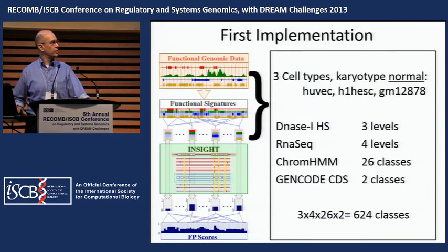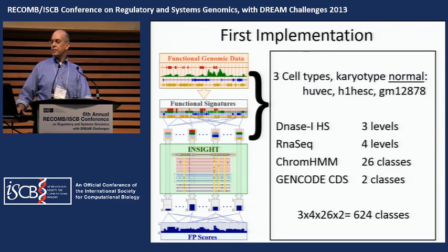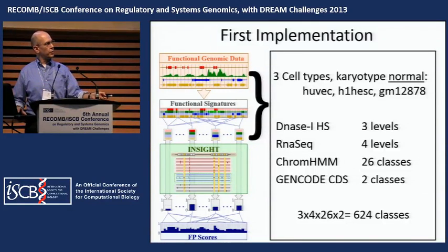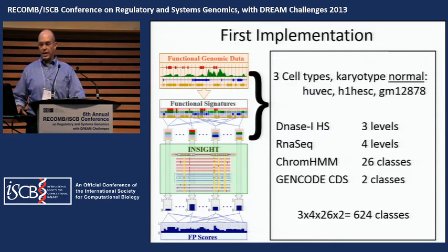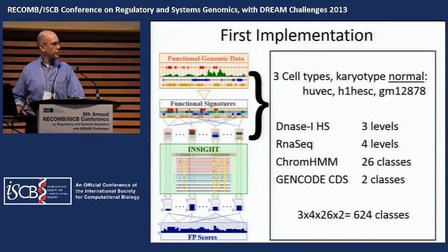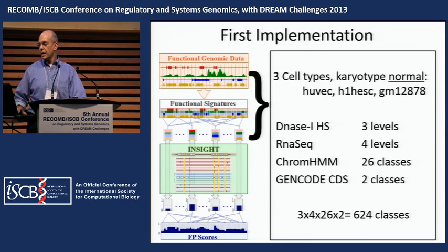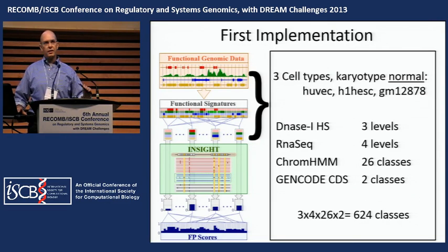We begin with three karyotype-normal cell lines: HUVEC, an epithelial cell; H1HESC, an embryonic stem cell; and GM12878, a B lymphocyte. For each cell type, we obtain a range of functional assays spanning important genomic properties: DNase-1 hypersensitivity, quantized to three levels of signal strength; RNA-seq, representing transcriptive activity, quantized to four levels; ChromHMM, representing chromatin and histone modification, providing 26 classes; and Gencode CDS, which provides the presence of an annotated protein-coding zone. This generates a genomic partitioning of 624 classes, in comparison with the eight from the conceptual illustration.